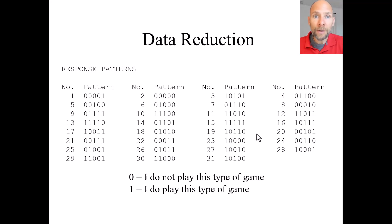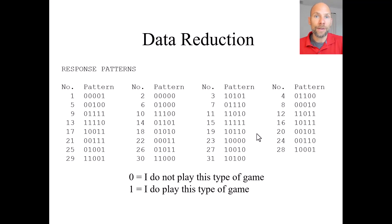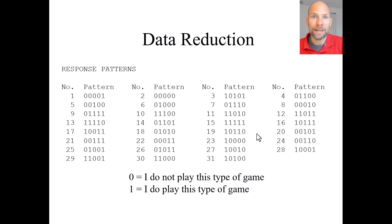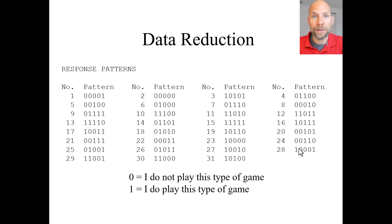Latent class analysis, as a latent variable model, works with variables corrected for measurement error. The latent variables account for unreliability in the observed item response patterns, allowing us to take measurement error into account. This is an important goal of exploratory latent class analysis — to reduce the information in many response patterns down to a manageable set. For example, those 31 different patterns can be reduced down to three different types.